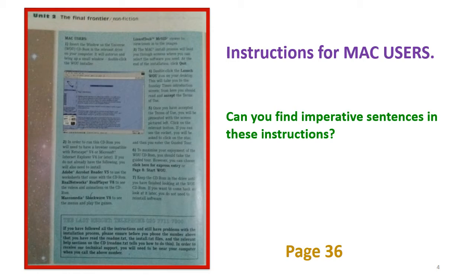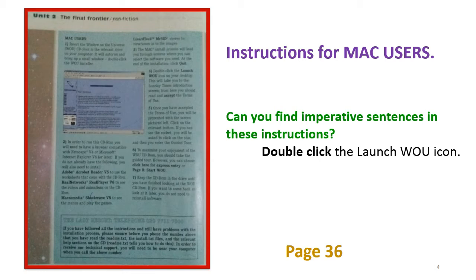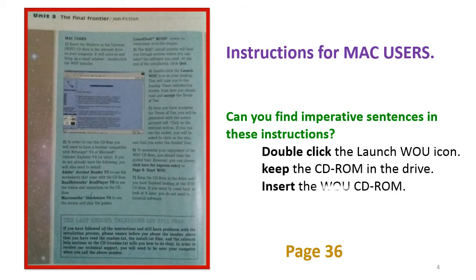Imperative sentences are just like commands. In imperative sentences, normally you cannot find a subject — an imperative sentence always begins with the verb. In these instructions you can find imperative sentences like: 'Double-click the launch WOU icon.' There is no subject; it starts with the verb — just like giving a command. Similarly, 'Keep the CD-ROM in the drive and insert the WOU CD-ROM.' All these sentences are imperative sentences.